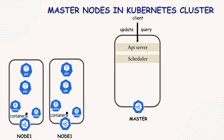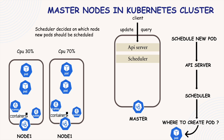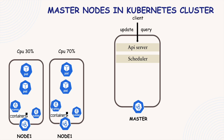Now comes the scheduler. Let's say you send a request to the API server to start a new pod. Once the request is validated, it's handed over to the scheduler. The scheduler decides which worker node should run this new pod, but it does not make decisions randomly. Instead, it follows a smart process — it looks at the resource requirements for your pod, like how much CPU or memory it needs, and then checks all available worker nodes to see which one can best handle the workload. If a node has more free resources or is least busy, the scheduler chooses that node. The scheduler only makes the decision on where to run the pod; the actual process of starting the pod on that node is done by Kubelet, which is running on the selected worker node.